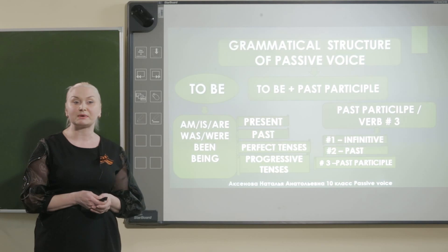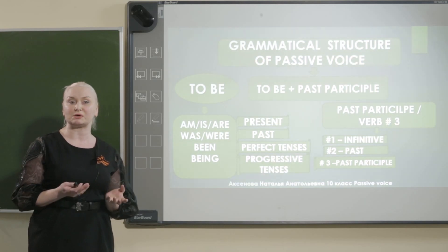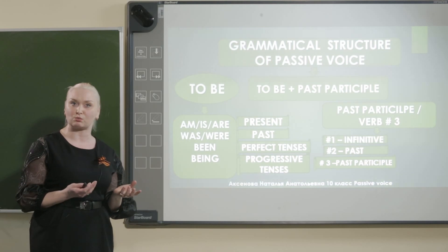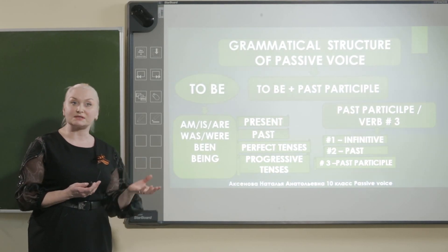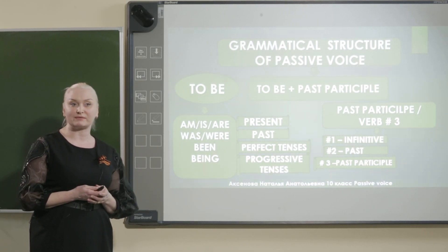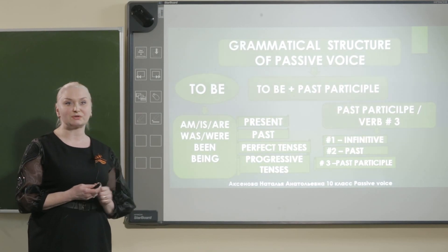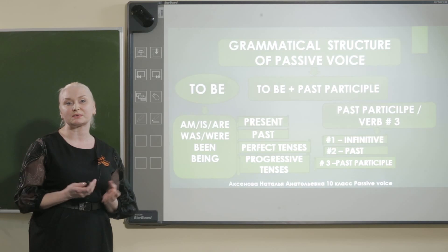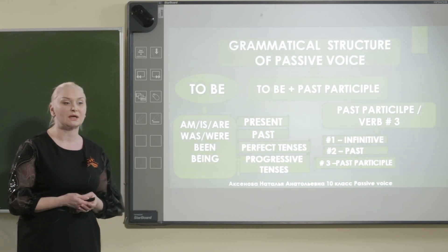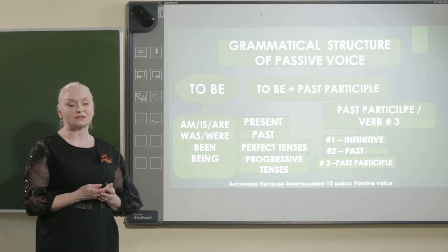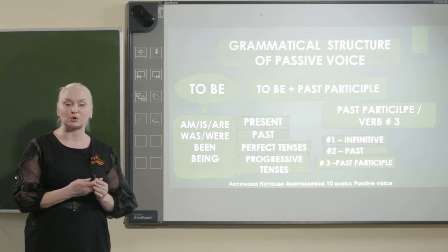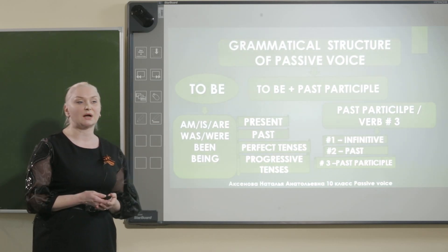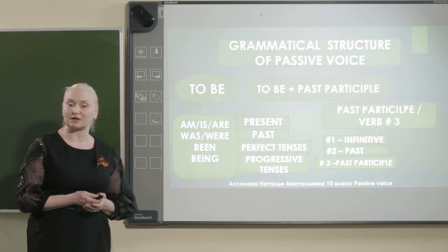So, what is past participle? Past participle is the form of verb. And as you remember, there are two forms of verbs: regular and irregular ones. В английском языке существуют правильные и неправильные глаголы. And you have to remember: for passive voice, just only past participle is used. Для формы страдательного залога мы используем строго третью форму глагола, если это неправильный глагол, либо окончание -ed, если это правильный глагол.